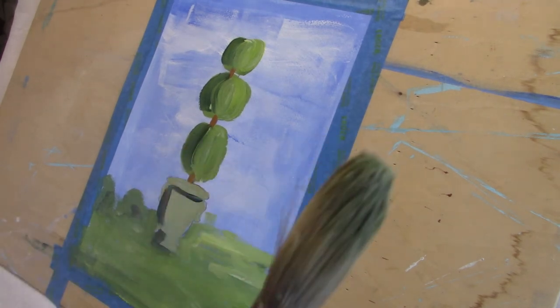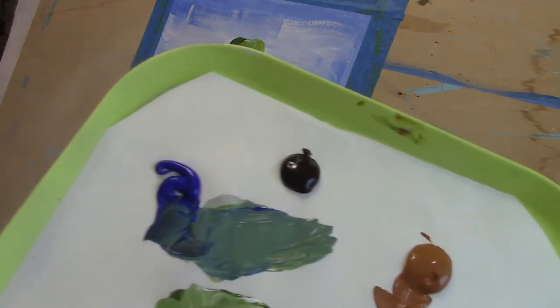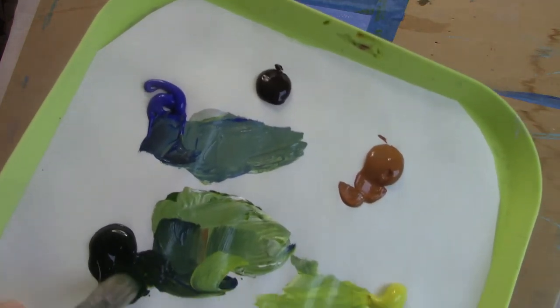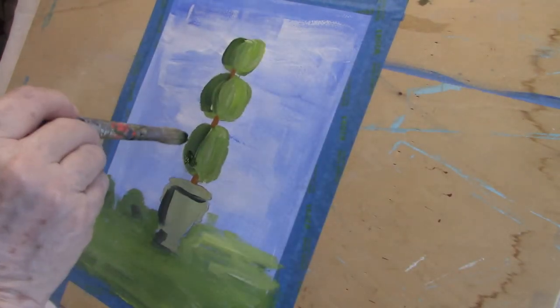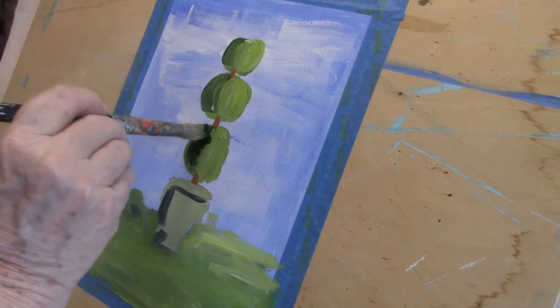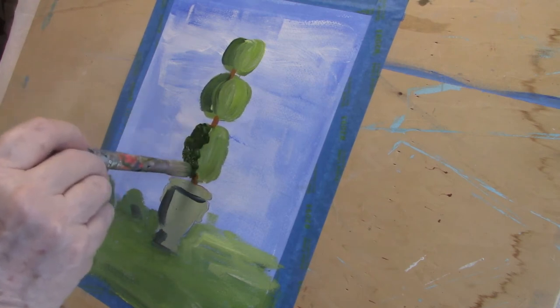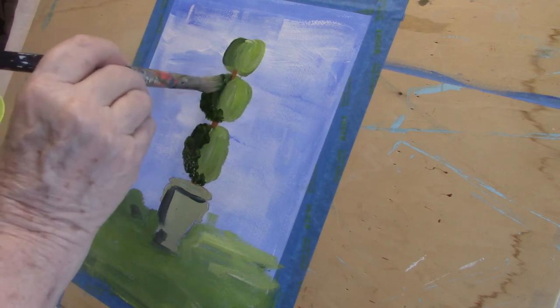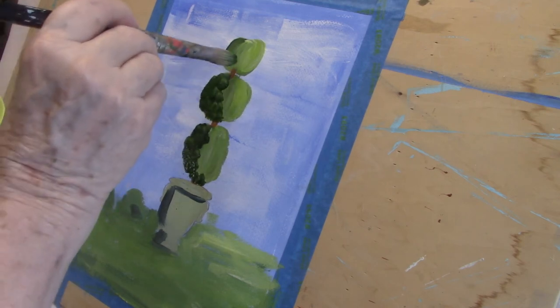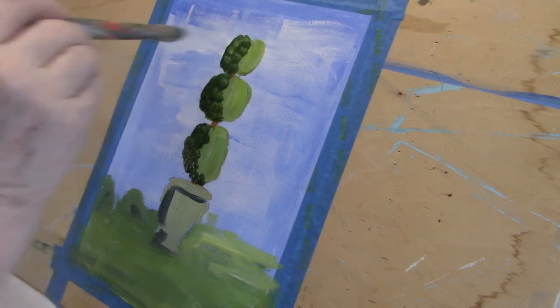I'm going to use an old bristle brush to add texture. I use it like you would use a stencil brush, I suppose, and just pounce it on—pounce the color onto the canvas. Well, in this case, watercolor paper. I'm doing my shadow side first, and the two sides sort of mingle along the middle.